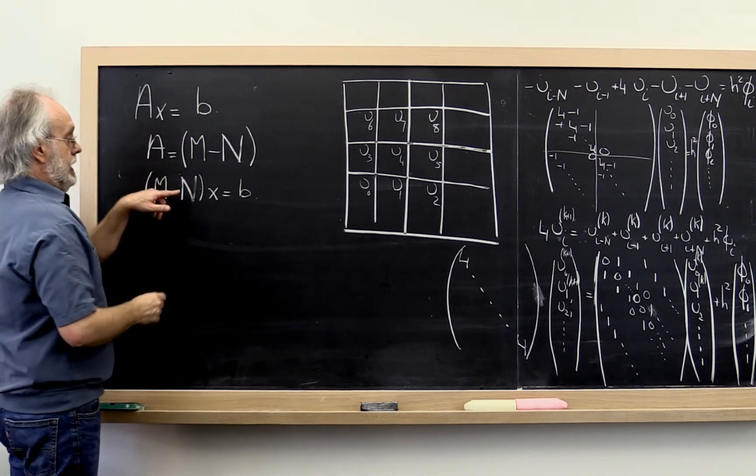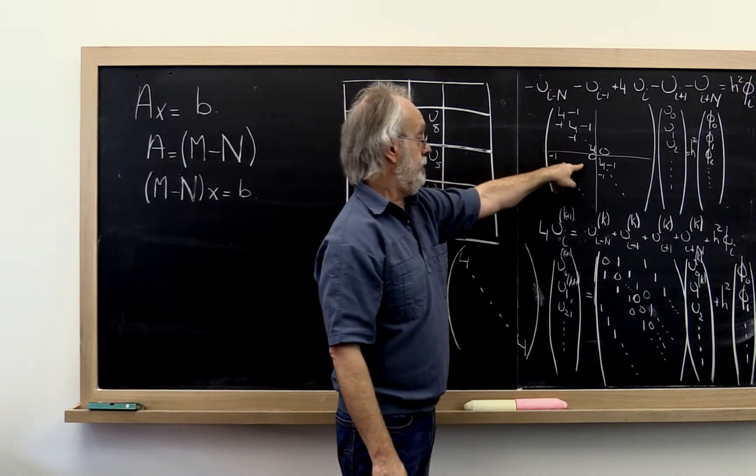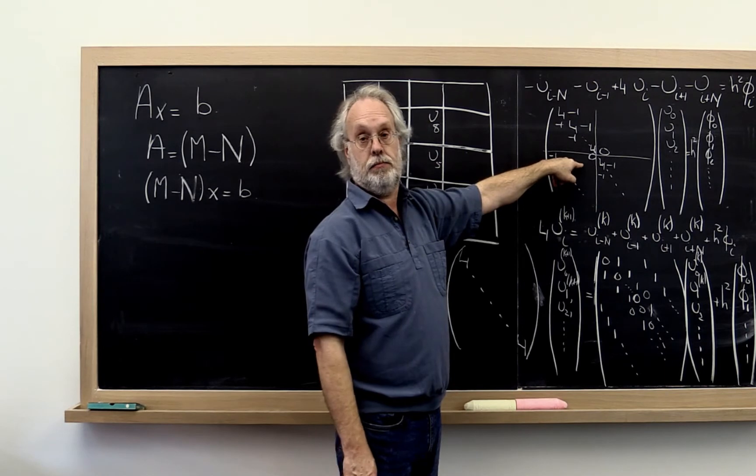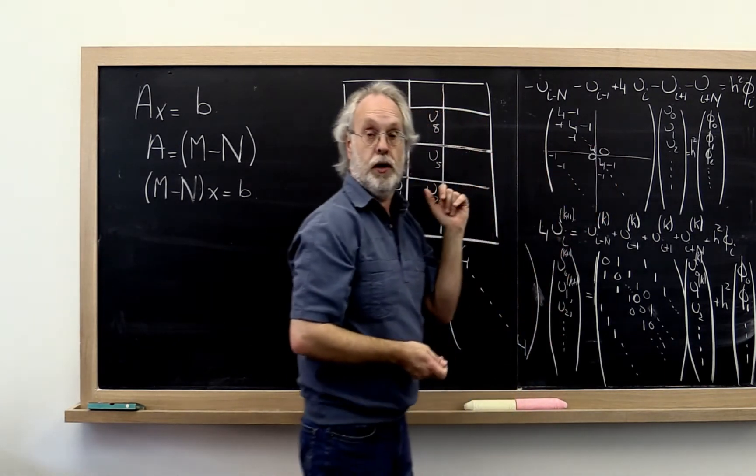And in our example, that is this view of the linear system except with this matrix written up as the difference between two other matrices.